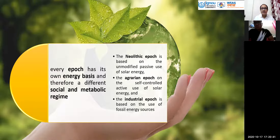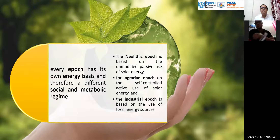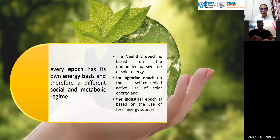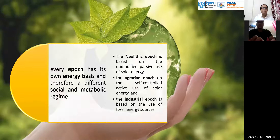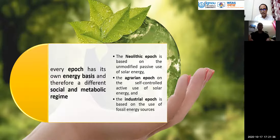Then came the industrial epoch. The agrarian epoch faced threats to survival due to scarcity of resources, food, and everything they depended on. With the advancement of human knowledge, we developed the industrial epoch, which is based on the use of fossil energy resources. The transition from one epoch to another is essentially based on the flow of energy, driven by advancement of knowledge and different social and metabolic regimes.